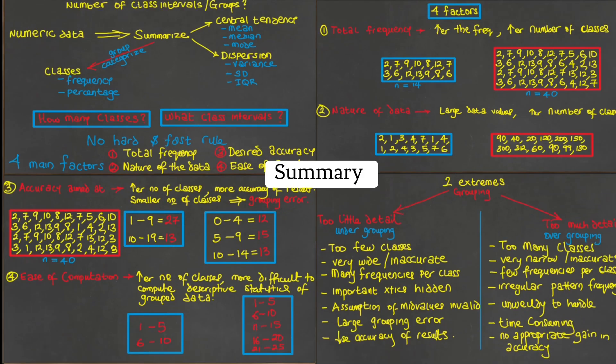In summary, grouping of numerical data is a way of further summarizing and making sense of data. There is no hard and fast rule for obtaining the number of groups. A researcher is expected to avoid the extremes of under-grouping and over-grouping. The Sturges rule helps us to objectively get an optimal number of groups for our data.